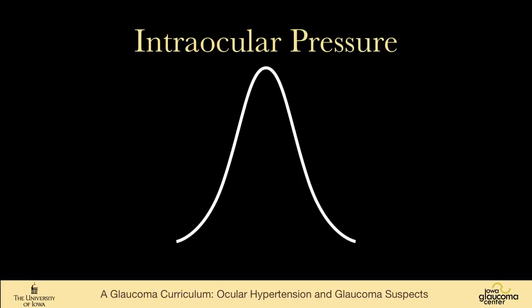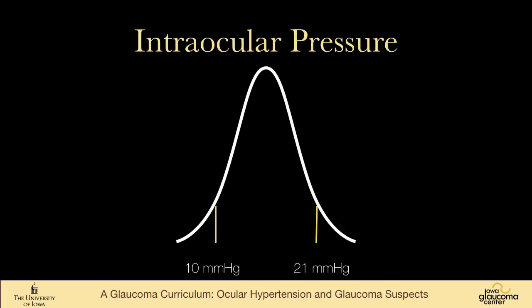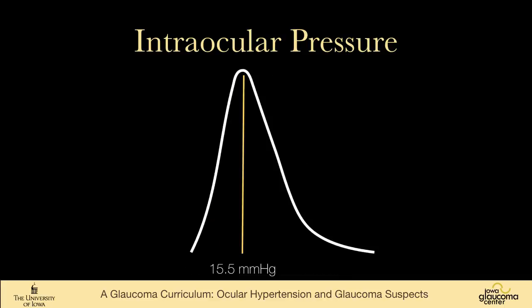So this is what we might imagine the bell-shaped curve would look like with the peak at 15 and a half; plus or minus two standard deviations would give us this 10 to 21 millimeters of mercury. But in reality, the curve is skewed to the right. There are very few people who have pressures under 10 who have not had glaucoma surgery, and 10% of the population is above 21 millimeters of mercury.